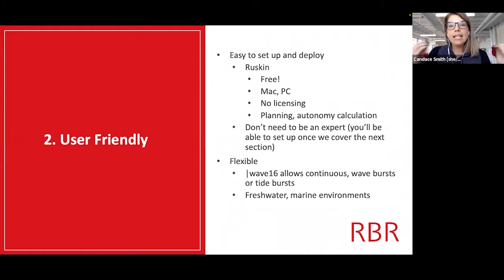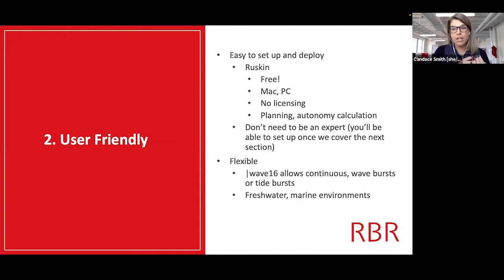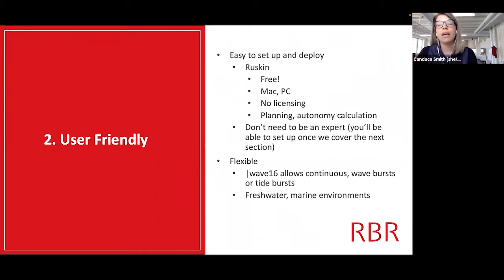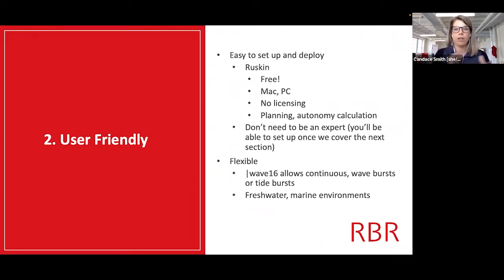The easy-to-set-up piece is really Ruskin — it's super easy to do it there and it's really flexible. The Wave 16 feature actually allows you to do continuous sampling or wave or tide bursts. Continuous sampling gives you continuous pressure data — that's how we measure waves at RBR. Or you can do the wave sampling, which gives you burst data and all of these different parameters, like significant wave height and significant wave period. You can also use the instruments in freshwater or marine environments — they can be used in any environment.